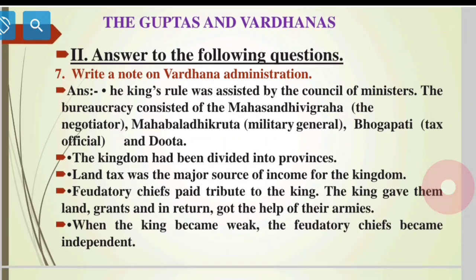Write a note on Vardhana administration. The king's rule was assisted by the council of ministers. The bureaucracy consisted of the Mahasandivigraha — the negotiator — Mahabaladikrita — the military general — Bhagavati — the tax official — and Dhuta. The kingdom was divided into provinces. Land tax was the major source of income. Feudatory chiefs paid tribute to the king; the king gave them land and grants and in return got the help of their armies. When the king became weak, the feudal chiefs became independent.